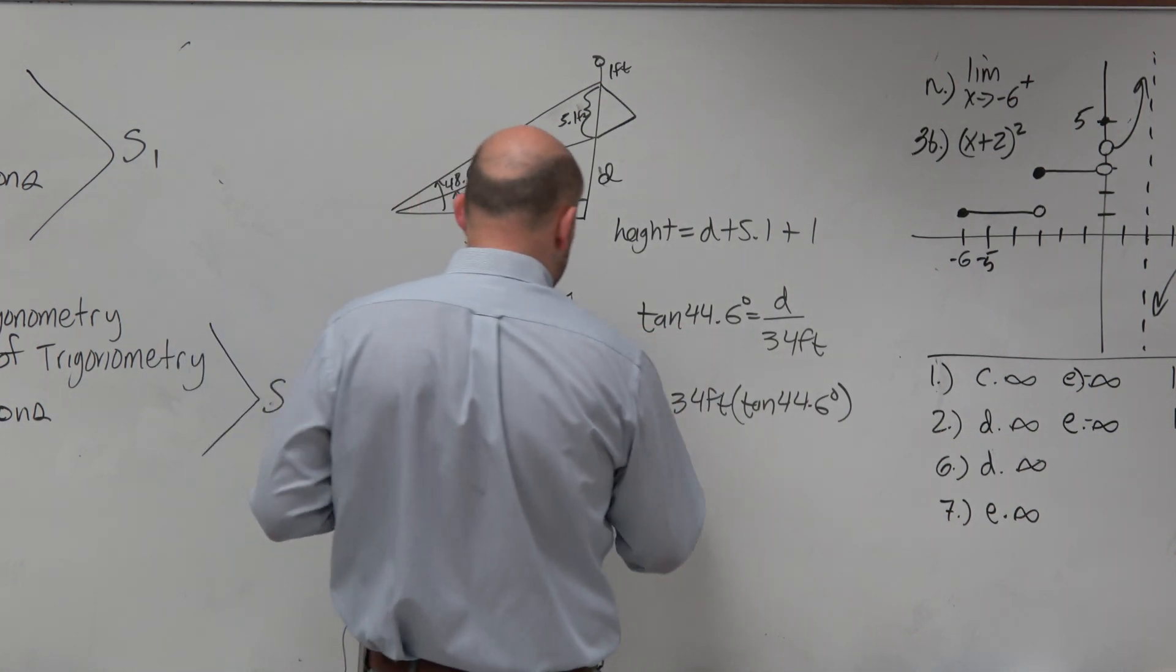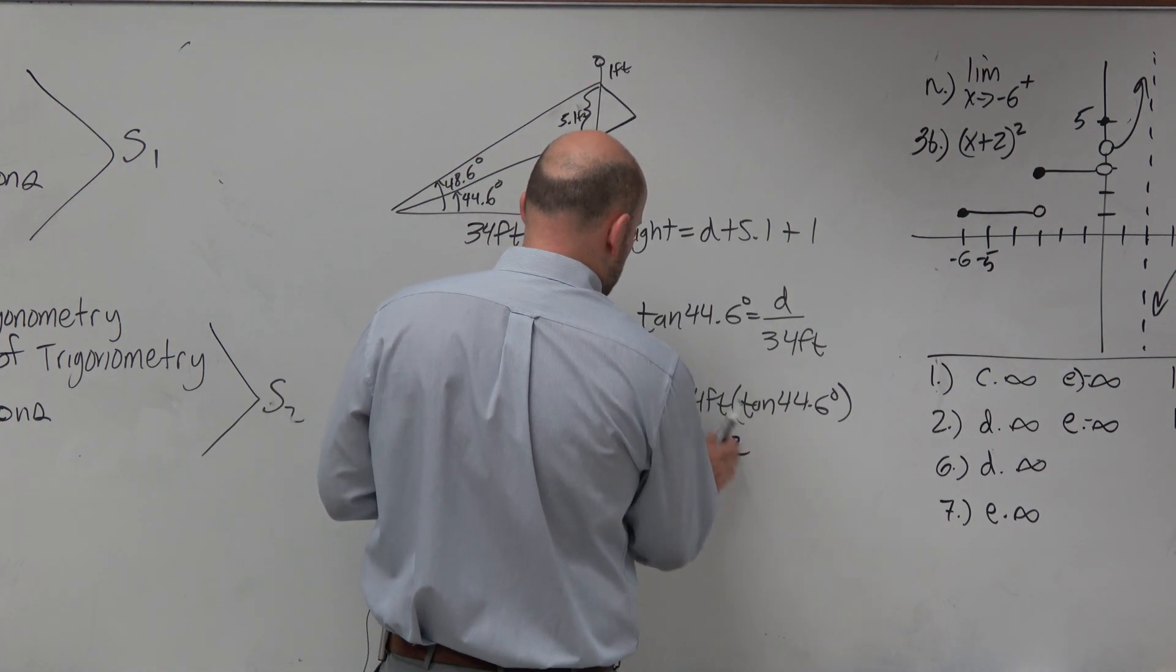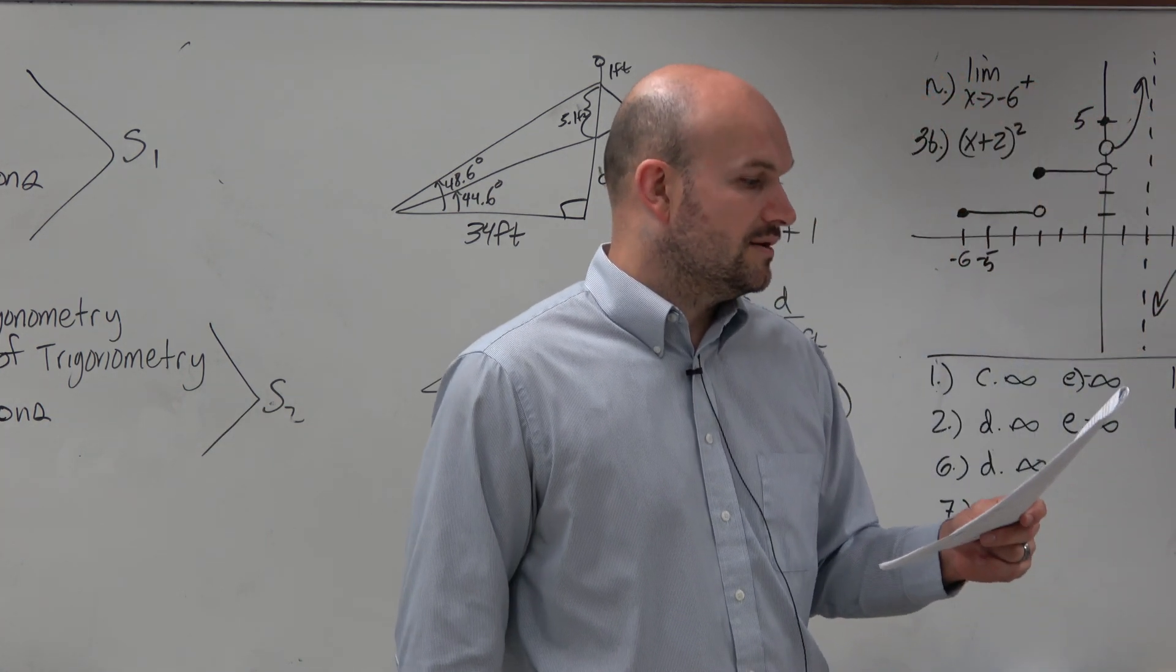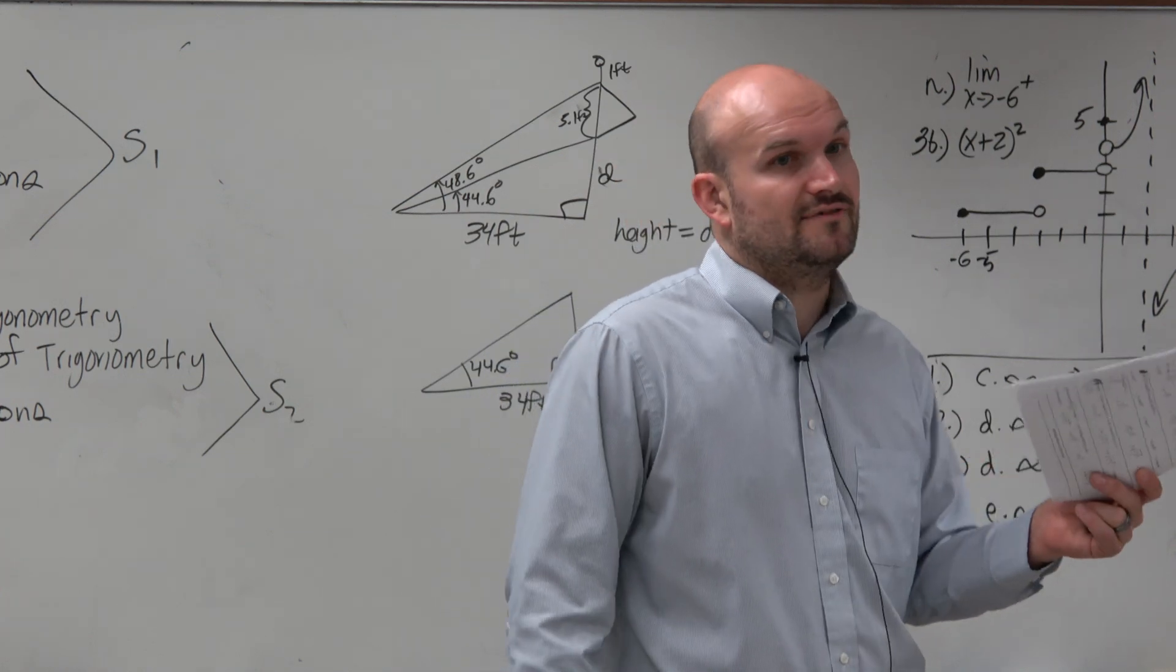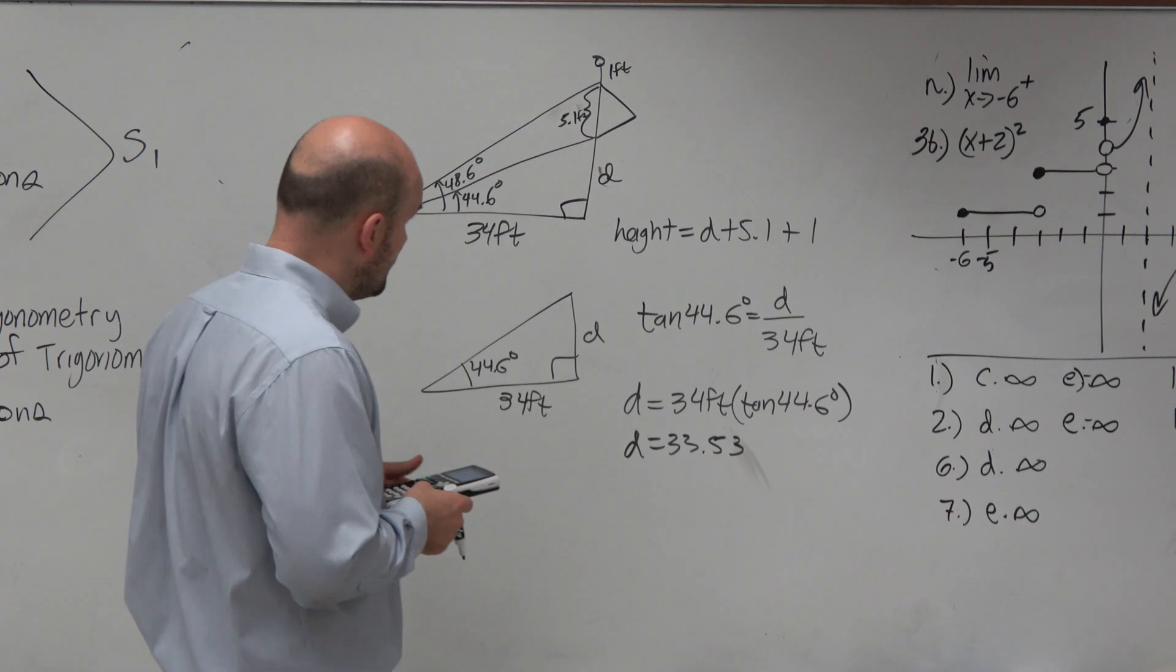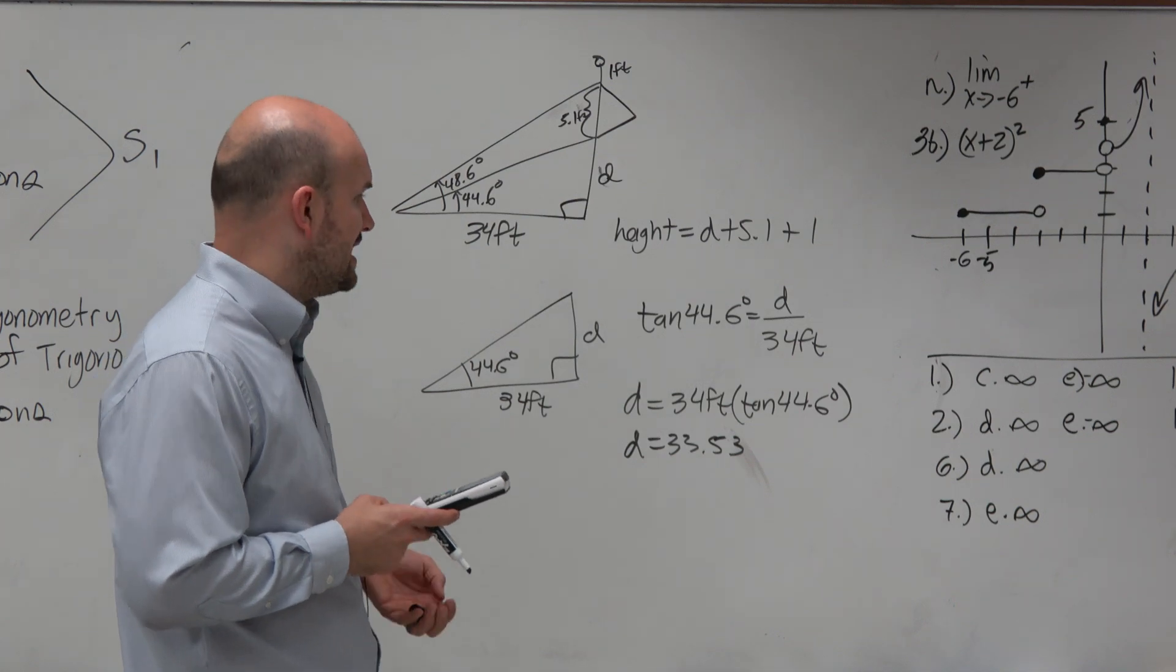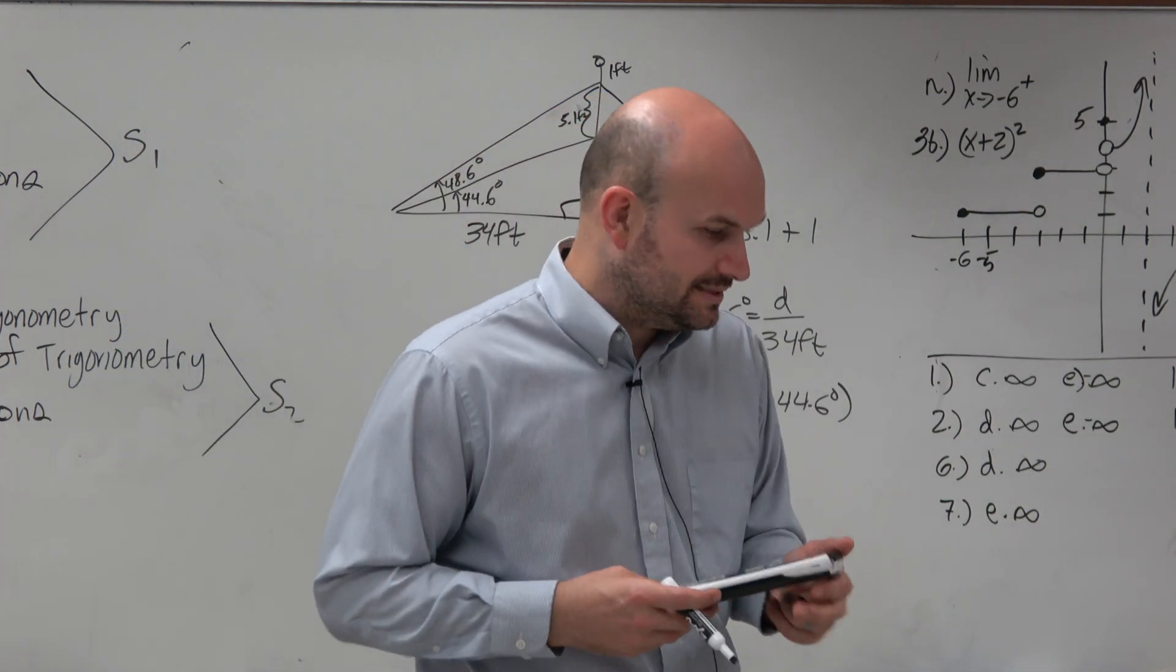But again, that is not my answer, is it? Actually, 33.53 if you round to the nearest tenth. Now, is that an answer choice, though? No. But 33 was. And some people might say, oh, well, it's close enough. I'll just go with that answer, right? So if I add 5.1 to that answer and then add 1, I get 39.6. And is that an answer? Yes. And that is E.